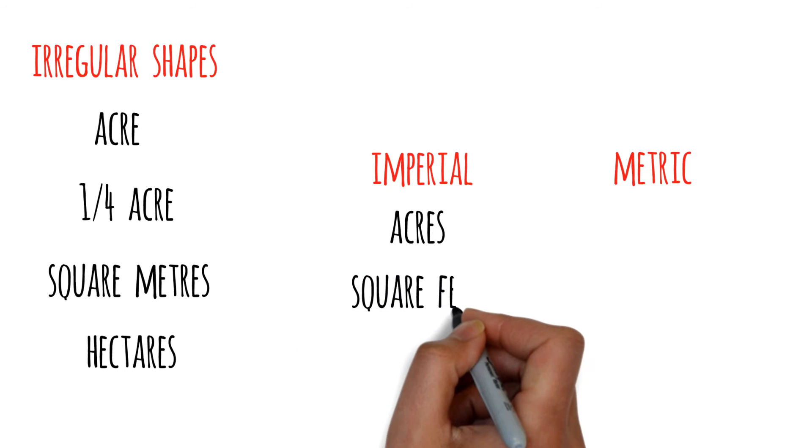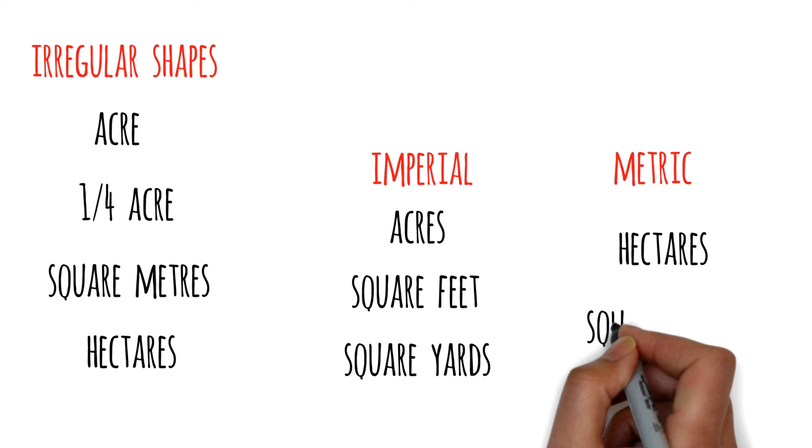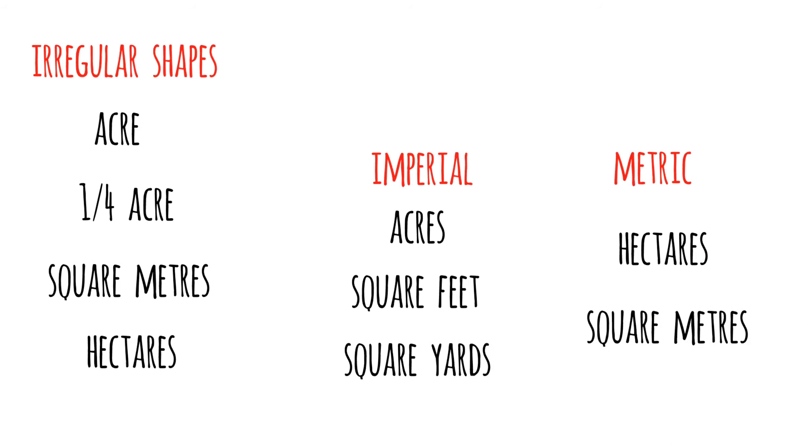Terms like acres, square feet, or square yards are imperial units of area. Hectares and square meters, on the other hand, are metric units of area.